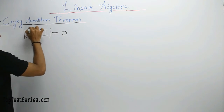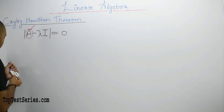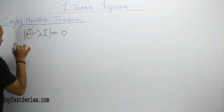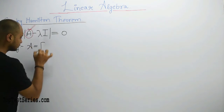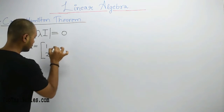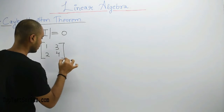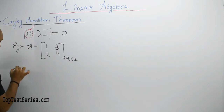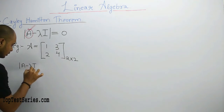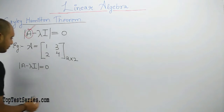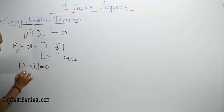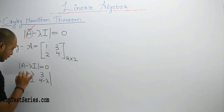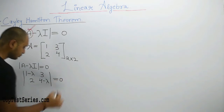Let me take a 2×2 square matrix: [1, 2; 3, 4]. Now if I write its characteristic equation as |A - λI| = 0, then what do we get? (1-λ)(4-λ) with 2 and 3 off-diagonal — this gives us the characteristic equation. So we have: (1-λ) and (4-λ), equal to zero.